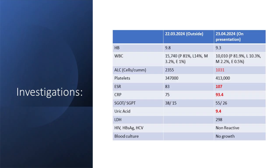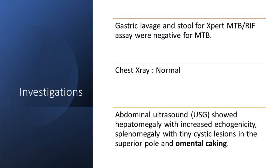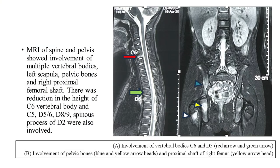Her investigations showed lymphopenia that wasn't present earlier, rising ESR and CRP, and sky-high uric acid. Gastric lavage and stool GeneXpert were both negative. Chest X-ray was normal. Ultrasound abdomen showed omental caking. MRI spine revealed multiple vertebral involvement including the femoral shaft.